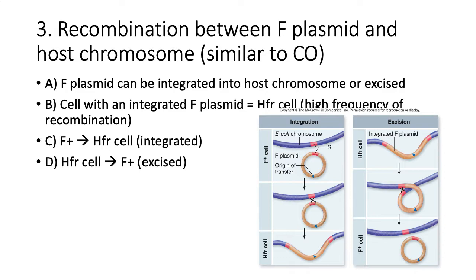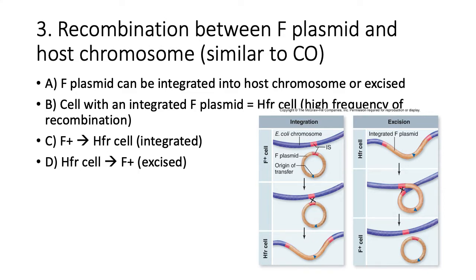Recombination can also occur between F-plasmids and the host chromosome, similar to crossing over. If the F-plasmid integrates into the host chromosome, those cells are called HFR cells - high frequency of recombination. F+ cells with a separate plasmid remain called F+ cells; HFR cells have the plasmid integrated into the genome.